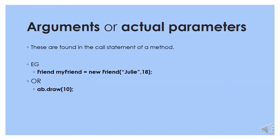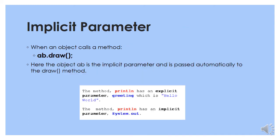Arguments or actual parameters are the ones found in the call statement of a method, as opposed to the formal parameters in the method header. An implicit parameter is when an object calls a method, like ab.draw(). Here the object ab is the implicit parameter and is passed automatically to the draw method.